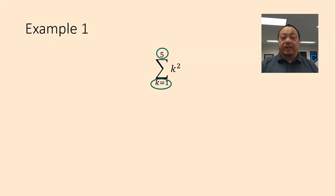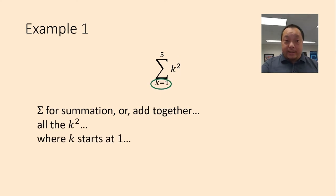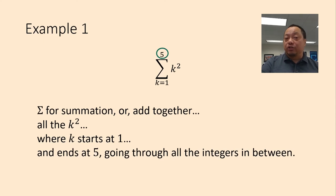These two parts say we're starting with k equals 1 and we're ending at 5. We just write 5 on top and not k equals 5, but it's understood that it's the same k. We're starting with k equals 1 and we're ending with k equals 5. And the assumption is to go through all the integers in between. Not just the number 1 and the number 5 alone, but 1, 2, 3, 4, 5. Let's summarize. This is what the symbol says. Sigma, for summation or add together, all the k squared, where k starts at 1 and ends at 5 going through all the integers in between.